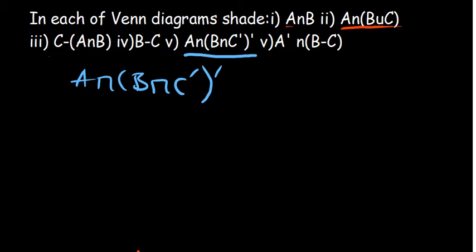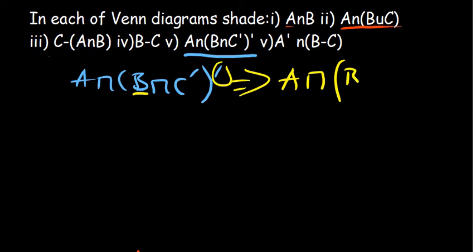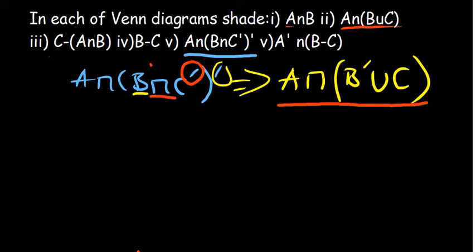How do you shade this one? You can simplify what you have first. So you have A intersection — from De Morgan's law, you distribute the complement, and you're going to have B complement union C. A complement of a complement will cancel out, the intersection becomes a union, and B becomes a complement. Basically, that is the simplified form of the statement that we have.